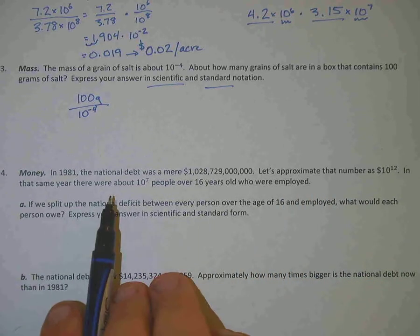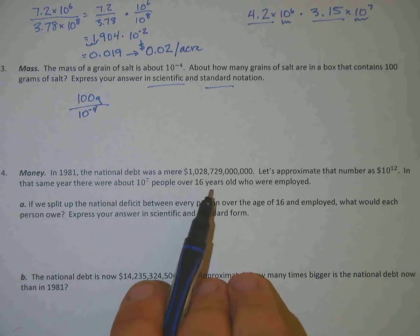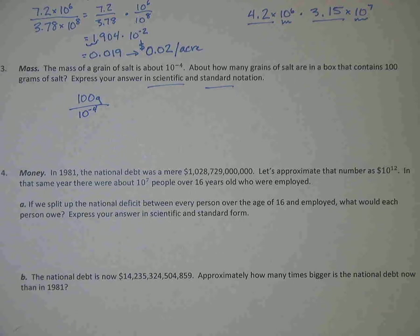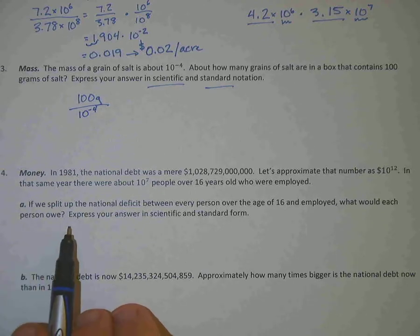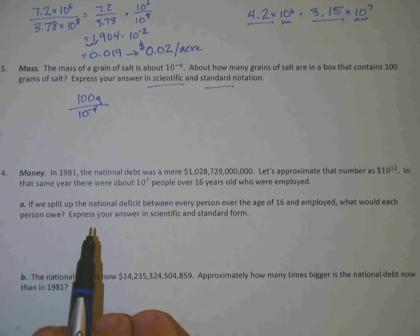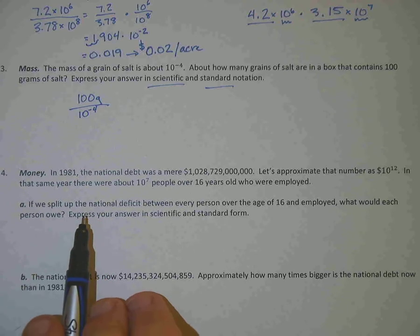And in the same year, there were about 10 to the 7th people over 16 years old who were employed. So this was just kind of a way to pay off that debt maybe. We'll see what it actually turns out to be.